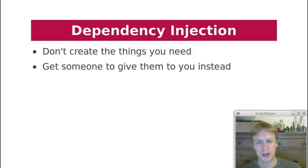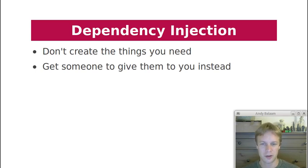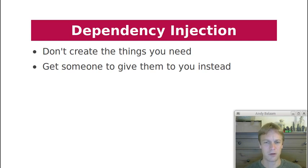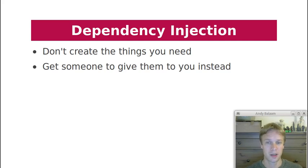First of all, what is dependency injection? Well, dependency injection is an idea from fairly early in object-oriented programming that's still really important. The idea is not creating the stuff that you use to do your job, but getting someone to give them to you. You could take that to the extreme and it would be silly, but it's often a really good idea especially to support testing. It wasn't originally designed necessarily to support testing, but that is a critical part of why it's so important.